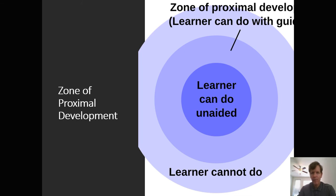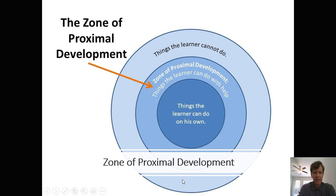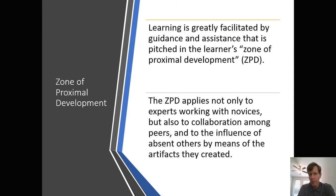You can see further in the visual: the things the learner can do on his own, then the ZPD — the things the learner can do with help — and then things a learner cannot do. Learning is very much aided by guidance and assistance within the ZPD. There can be many forms of guidance: think-alouds, tips, clues. The ZPD applies not only to experts working with novices, but also with peers. Students can provide help to each other, and in a social constructivist classroom, a lot of collaborative learning takes place.